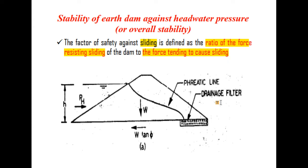This ratio is known as the factor of safety against sliding. Here we have the weight of the dam, weight times tan phi, the upstream pressure due to headwater, and the height of headwater.